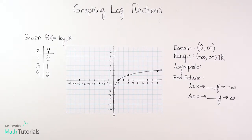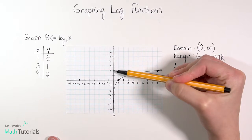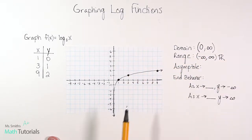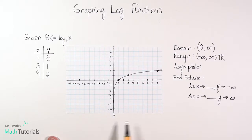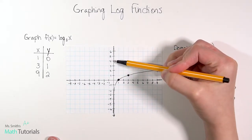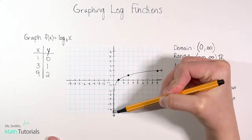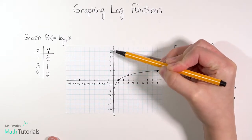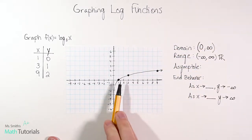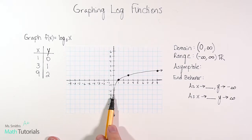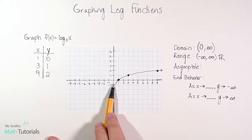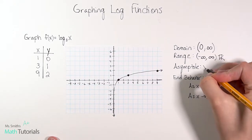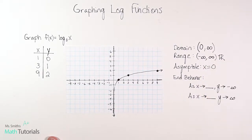For our asymptote, they're asking for the equation of the vertical asymptote. It's this wall right here where we get really close to x equals 0 but don't actually cross it — like there's an invisible line. The equation in this case is x equals 0, because that's where the vertical asymptote is occurring.